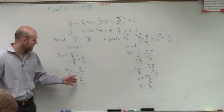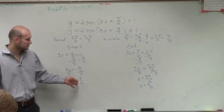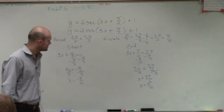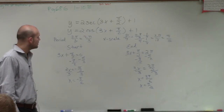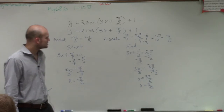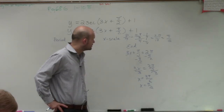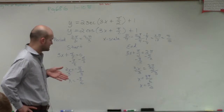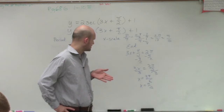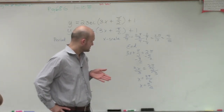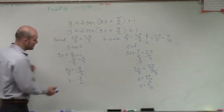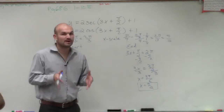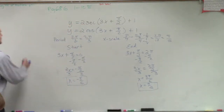So what we can determine is that my graph runs from negative π over 6 to π over 2. Let's go ahead and sketch this graph, because in order to determine our phase shift, amplitude, and so forth, we need to be able to graph this. The graph starts at negative π over 6 — it doesn't start at 0.